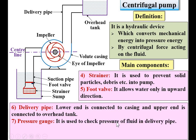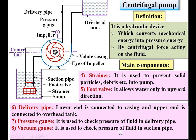Next: pressure gauge. It is used to check the pressure of fluid in the delivery pipe and is located near the casing. The pressure is always above atmospheric pressure in the delivery pipe, which is why it is called a pressure gauge. Vacuum gauge — it is used to check the pressure of fluid in the suction pipe, located near the eye of the pump. In the suction pipe, pressure is always below atmospheric pressure, so it is a vacuum pressure — that is why the vacuum gauge is there.